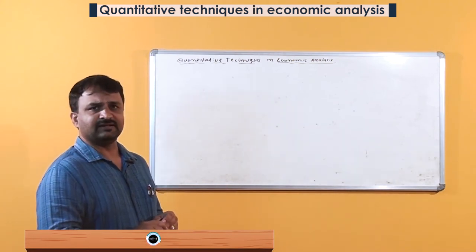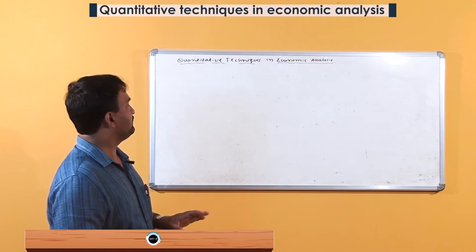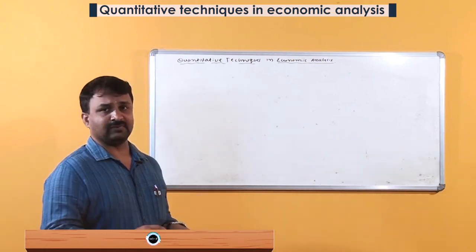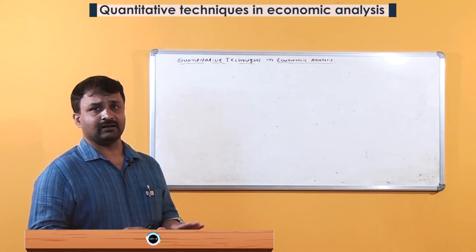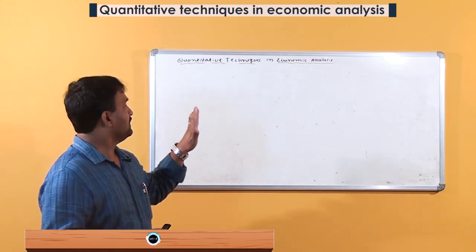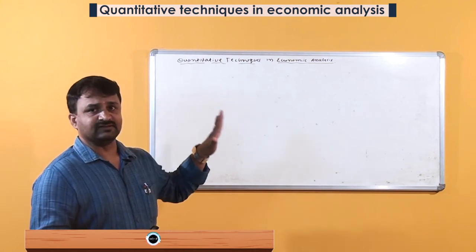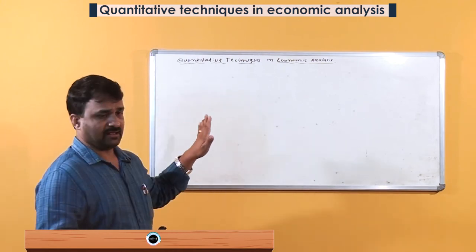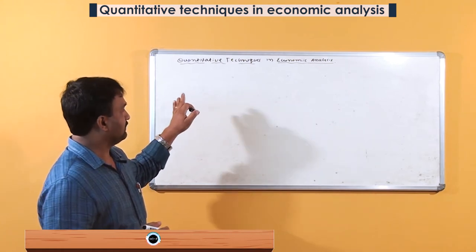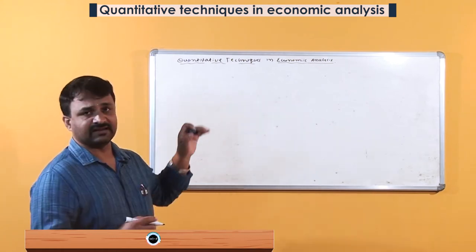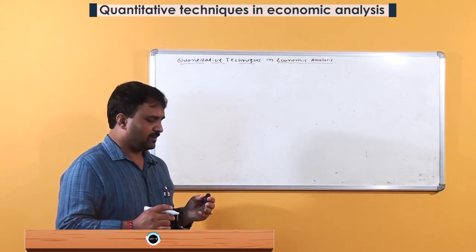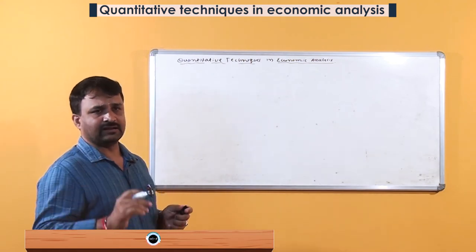There is a difference between economic quantitative techniques and literary economics. In mathematical economics we use symbols rather than words — equations in the place of sentences. Mathematical economics plays an important role in decision making.